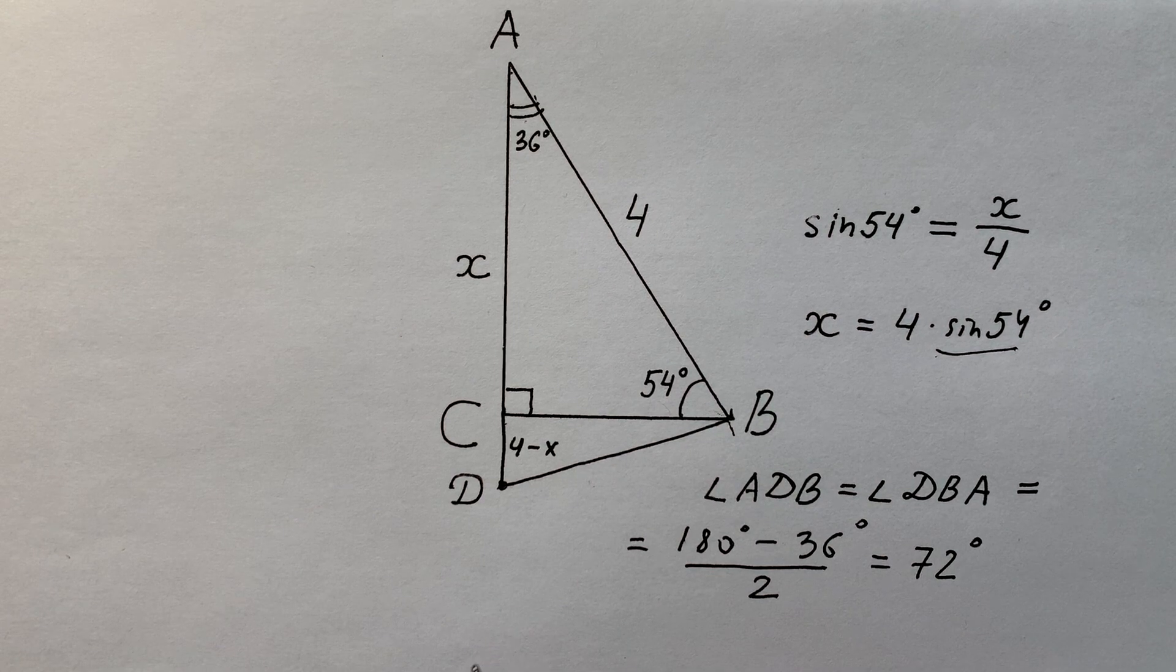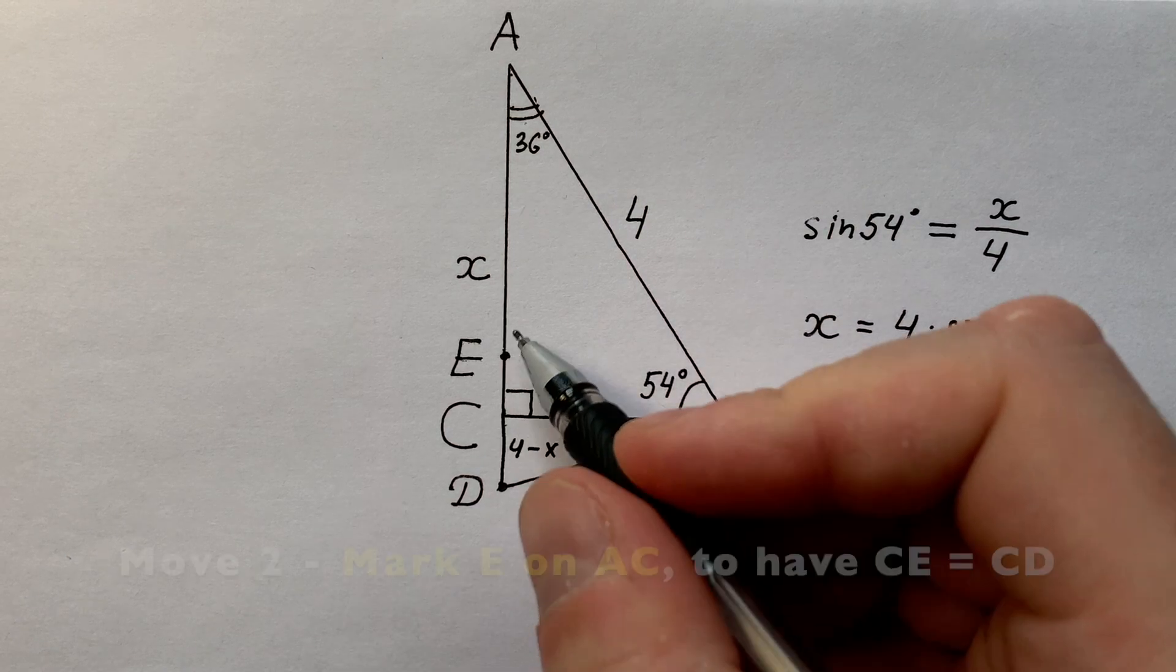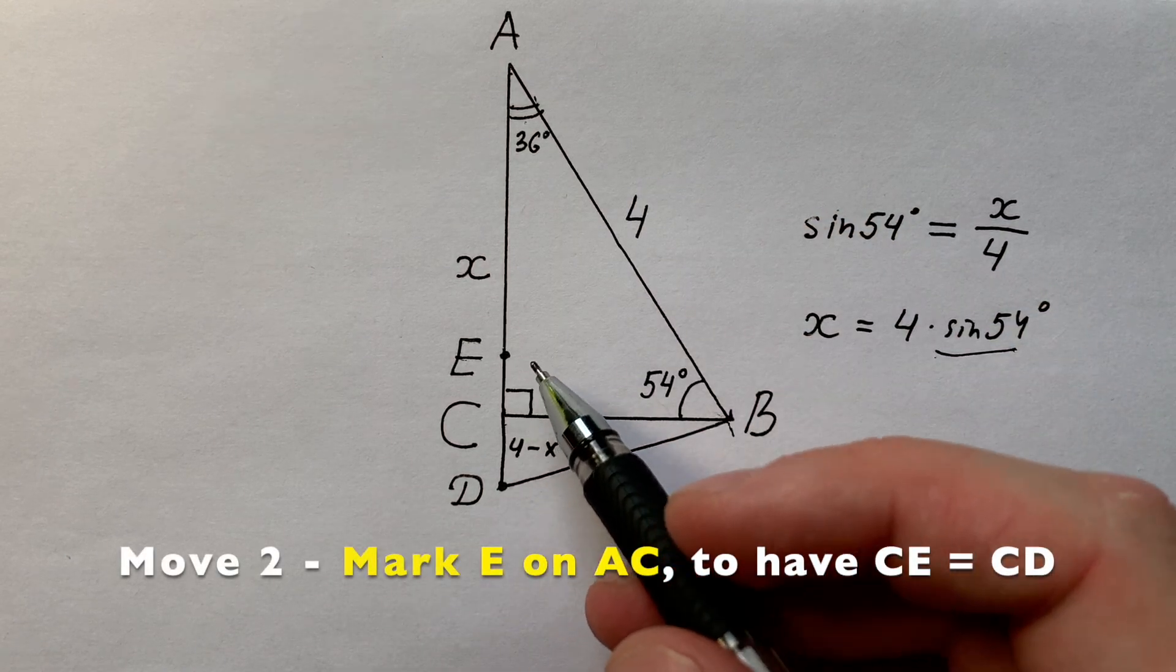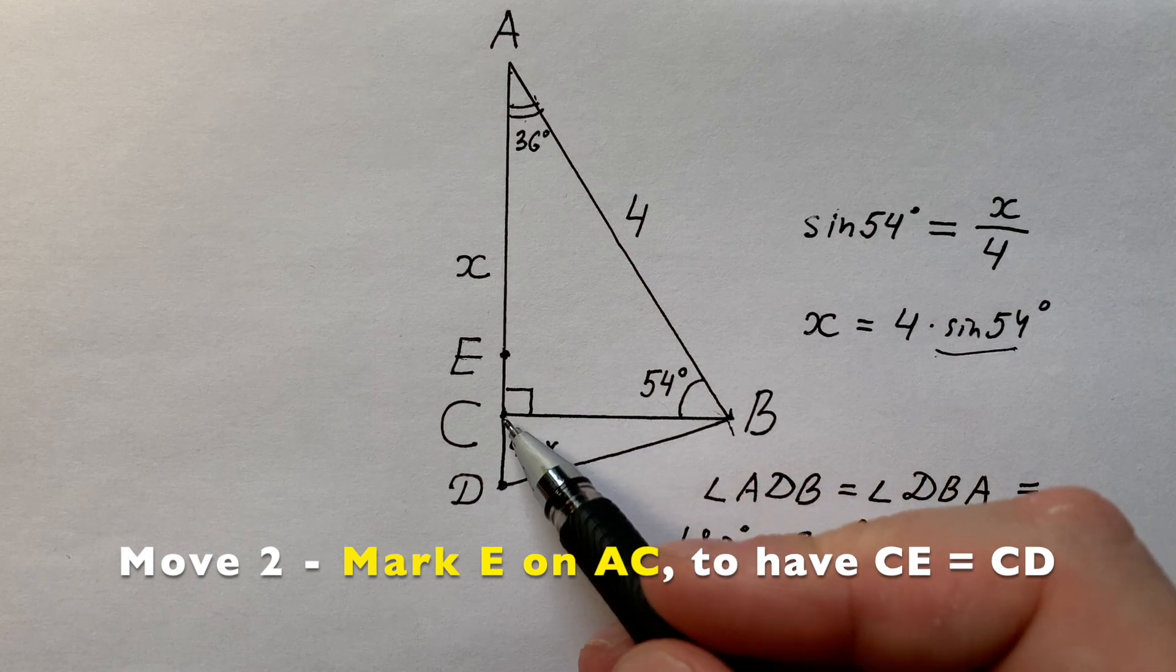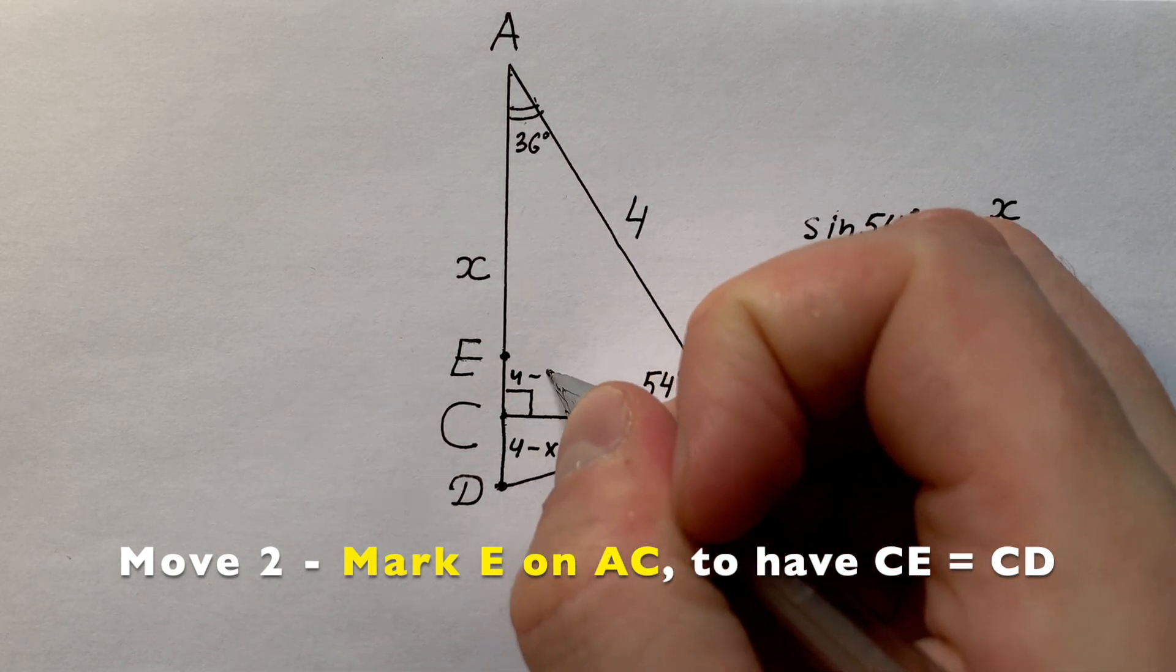And now let's make another impressive geometry trick. Now let's mark the point E on segment AC in the way that CE equals CD and it equals 4 minus x.